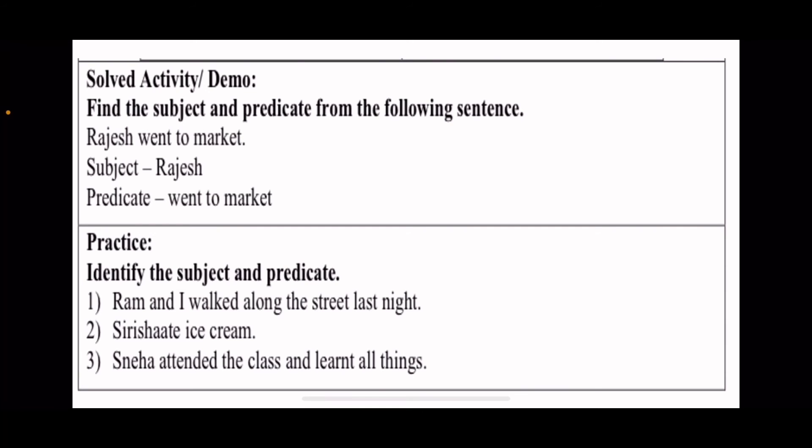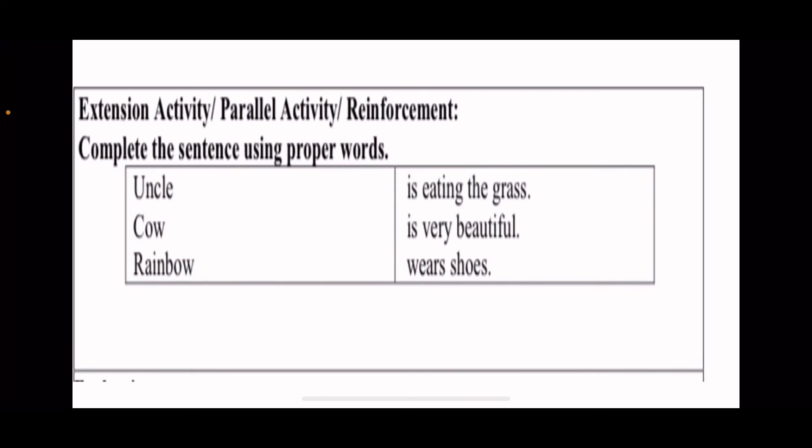Then, complete the sentences using proper words. So you have three of them: Uncle, Cow, and Rainbow. You have the sentences in column B. These are the predicates. So you have to make a sentence with proper subject. First, it will remain subject. Second, it will remain predicate. So you have to make sentences which will be meaningful sentences. These will remain full sentences. This way, you have to handle this activity.